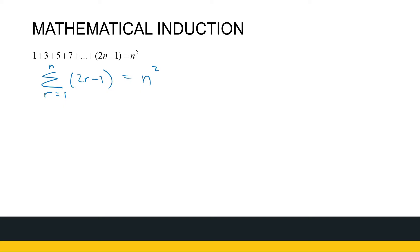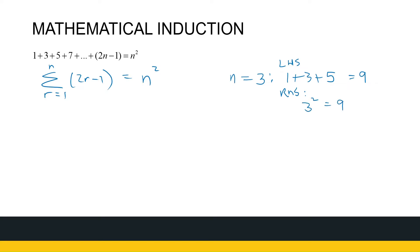We're saying that the sum of the first n odd numbers equals n squared. We can test it — for n equals 3, if I add the first three odd numbers: 1 plus 3 plus 5 equals 9. And on the right-hand side, 3 squared is also 9. So it works for n equals 3, but we want to show it for all natural numbers.